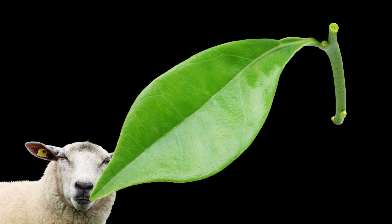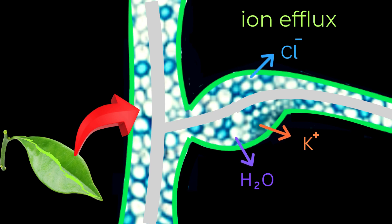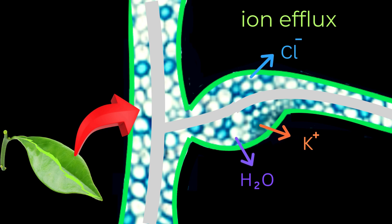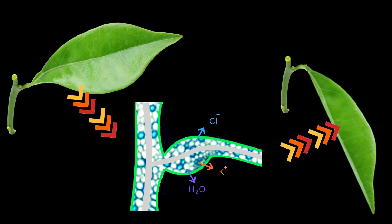This usually begins with the activation of ion channels in the membranes of motor cells. These channels open in response to the stimulus, allowing positively charged potassium ions, along with other ions like chloride, to flow out of the cells. As a result of the ion efflux, the osmotic balance shifts and water follows the ions out of the cells by osmosis. The loss of water leads to a decrease in turgor pressure inside the motor cells, causing them to become flaccid and shrink. This localized loss of rigidity results in the bending or folding of the leaf or petal — the visible nastic response.